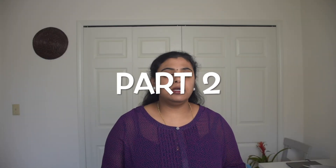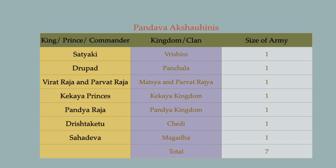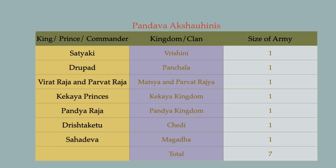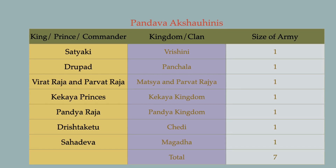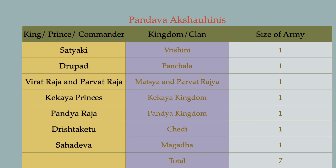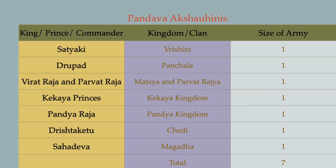On the Pandavas' side, seven Akshauhinis participated. The seven contributors were: Satyaki, a Yadava; King Drupad, father-in-law of the Pandavas and king of Panchala Desha; Virat Raja and Parvata Raja, who together contributed one Akshauhini — Virat Raja was the father-in-law of Abhimanyu and king of Matsya Desha; one Akshauhini was contributed by the Kekaya Rajkumars; one by Pandya Raja; one by Drishtaketu, son of Shishupala and king of Chedi; and one by Sahadeva, son of Jarasandha and king of Magadha, known as Magadha Sahadeva.